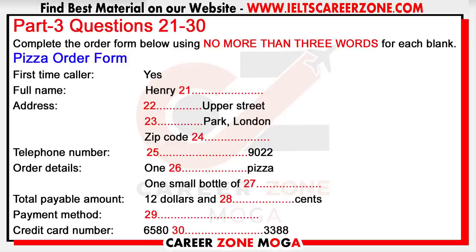Can I have your telephone number, sir? It's 743 890 222. That's 734 891 222, right? No, it's 743 890 222. Got it, sir. What would you like to order? I want a pepperoni pizza. Do you want it regular size or large? I think regular would be fine.